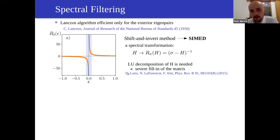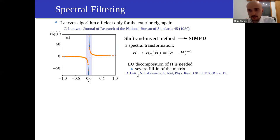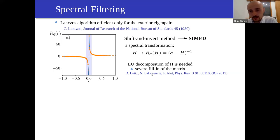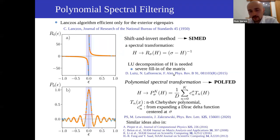Despite that memory bottleneck, the shift-and-invert method has allowed reaching system sizes of about 24 spins for the XXZ spin chain, which is still close to the current state of the art.